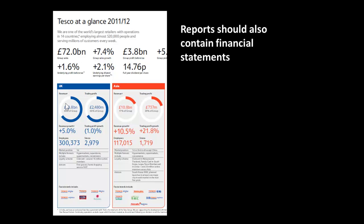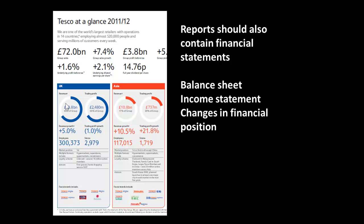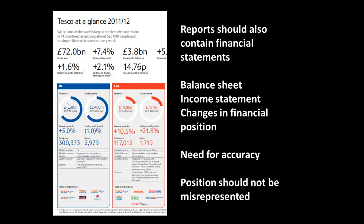Reports should also contain financial statements. In other words, what you see on the left here isn't really sufficient. Financial statements should consist of a balance sheet, income statement, and changes in financial position. There's a need for accuracy when you produce those financial statements, and companies are not allowed to misrepresent their position.